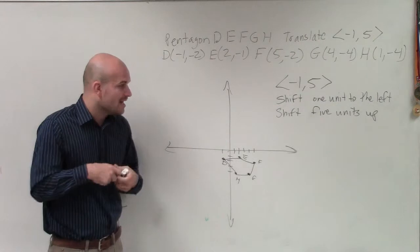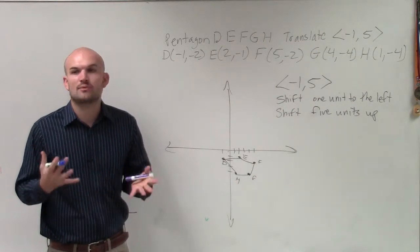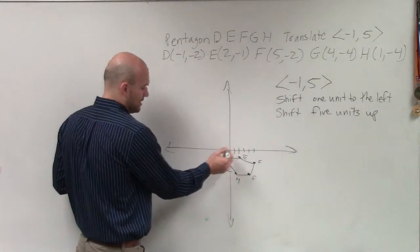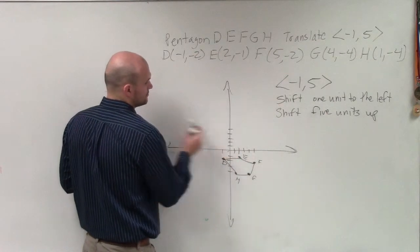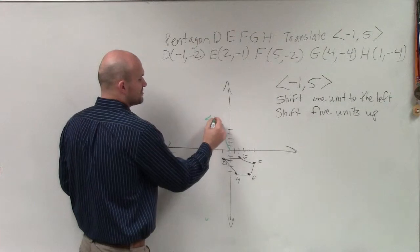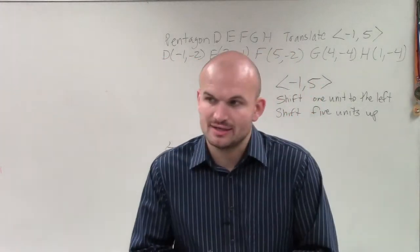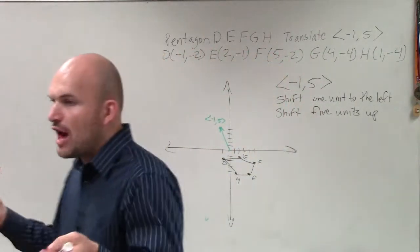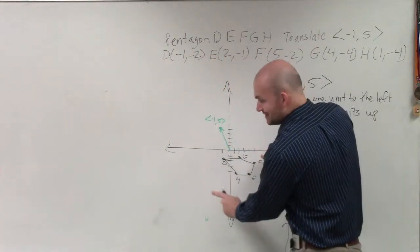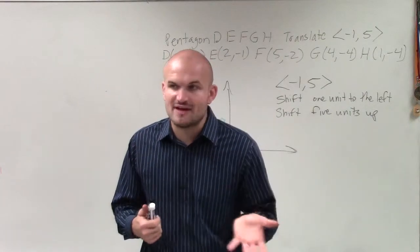So another way that I want to show you guys to do this — one way to kind of help you — we know we're going to be moving everything left 1 up 5. Sometimes what I like to do is start with our transformation vector and let's graph what that transformation vector looks like from 0. So if I went negative 1 up 5, this is what we call the transformation vector — that is the direction and distance that we're going to move the whole pentagon.